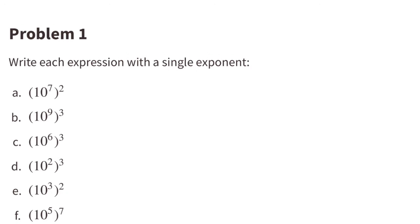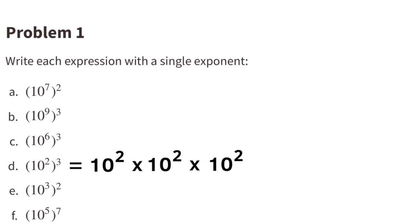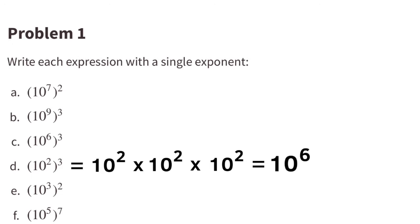Part D: 10 to the 2nd power, all cubed. That means 10 squared times 10 squared times 10 squared. Exponent 2 plus 2 plus 2 equals exponent 6. So 10 to the power of 2 all cubed equals 10 to the power of 6.